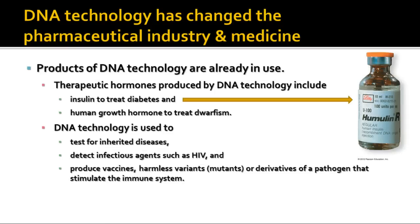DNA technology has really changed the pharmaceutical industry. Now you can make drugs that are very specific to individual people. We already have hormones produced by DNA technology like insulin and human growth hormone, and we can also use DNA technology to test for various kinds of inherited diseases, produce vaccines, and create harmless variants of pathogens that can stimulate the immune system. It's even possible now to produce anti-cancer drugs specific to one person's cancer.